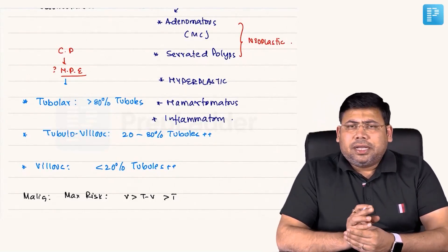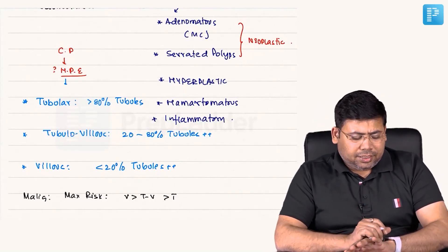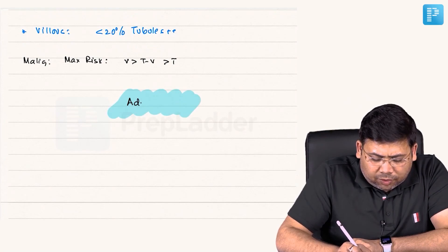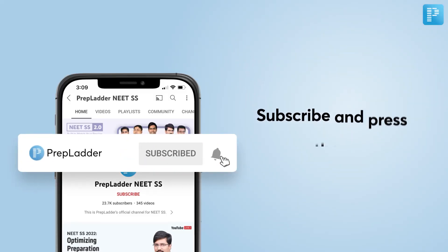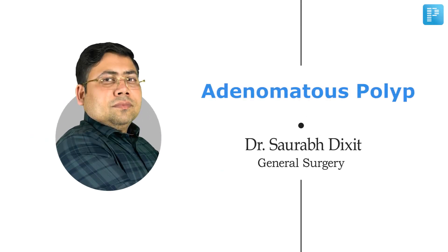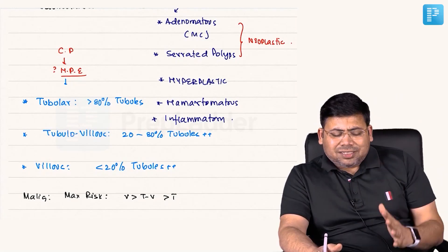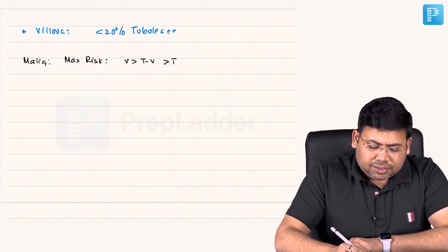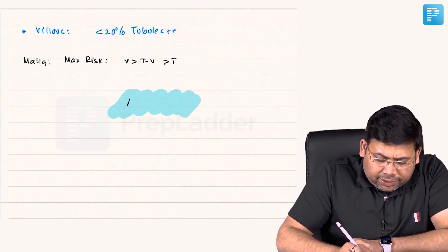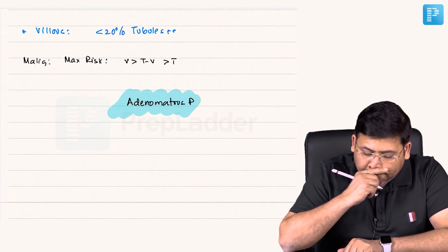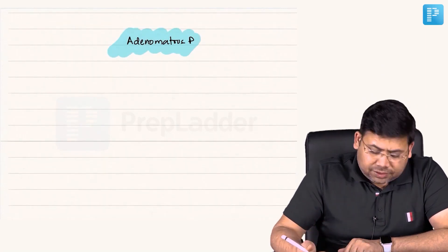Let us talk about adenomatous polyp — it is simple and straightforward. When we talk about adenomatous polyp, you have to see how these polyps are classified.